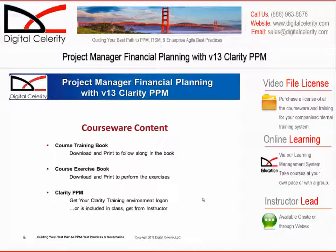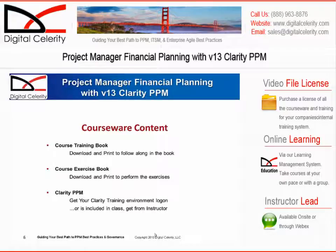One last thing before we get into the actual course content: to do the course, we need several things. First, we need the training book, which can either be provided to you in a PDF or downloaded from the LMS site. There is also a course exercise book, again in PDF form and downloadable from the site. In order to do the exercises, you need access to Clarity PPM. From Digital Celerity, some delivery methods include a Clarity system to do the exercises with, or you may need to provide your own. In any case, we demo the exercises in each module, so there's benefit to be gained even without Clarity PPM access.